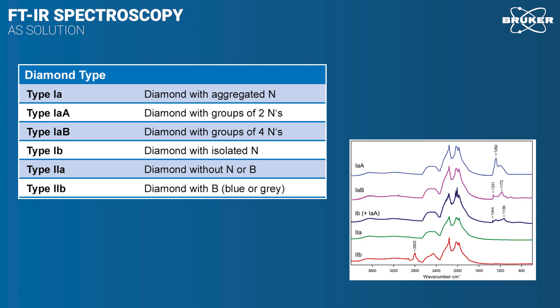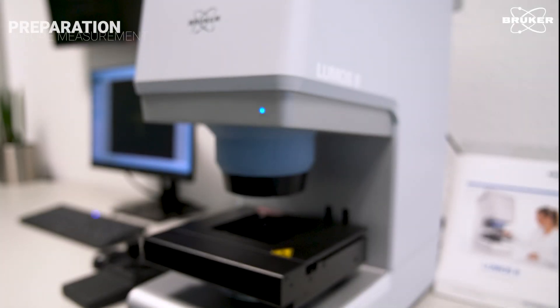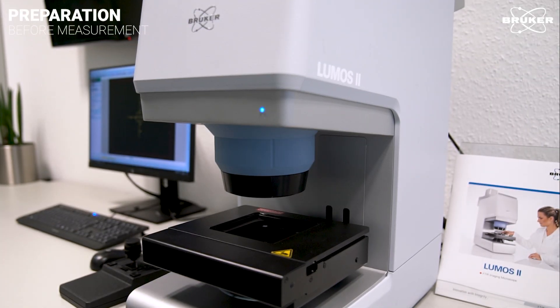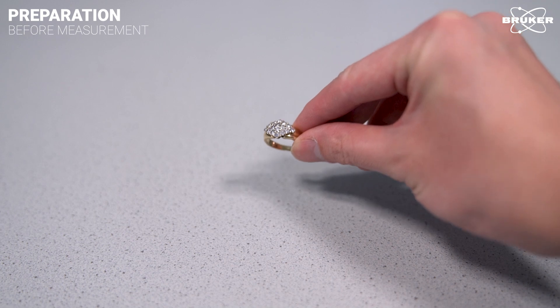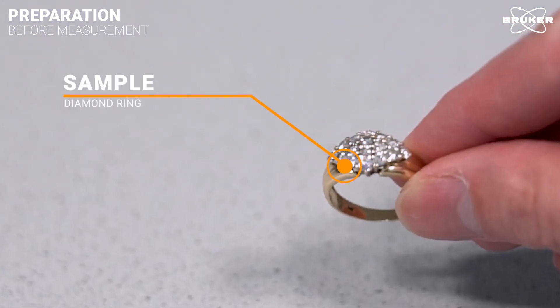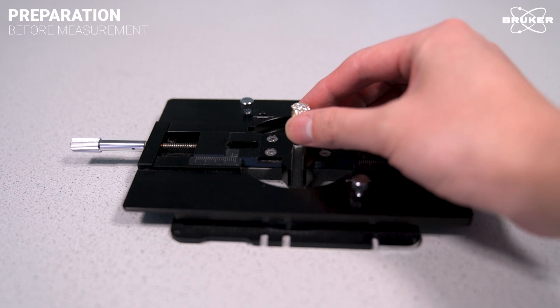But enough talk, let's demonstrate how the Lumos 2 can differentiate gemstones by their origin. As an example, we are using this diamond ring. We put the ring on the sample holder.